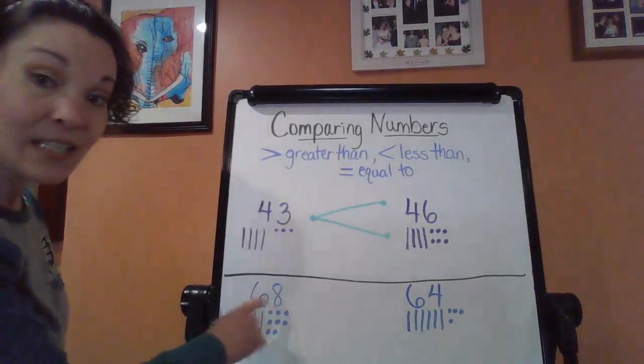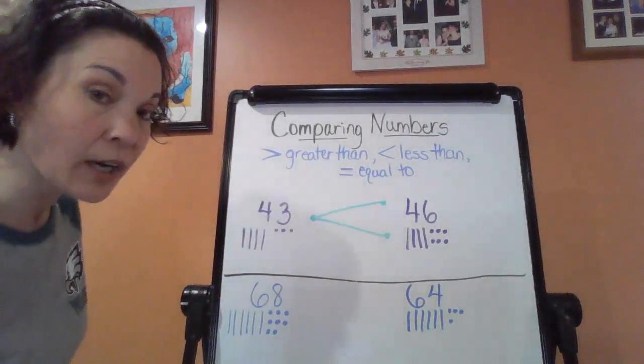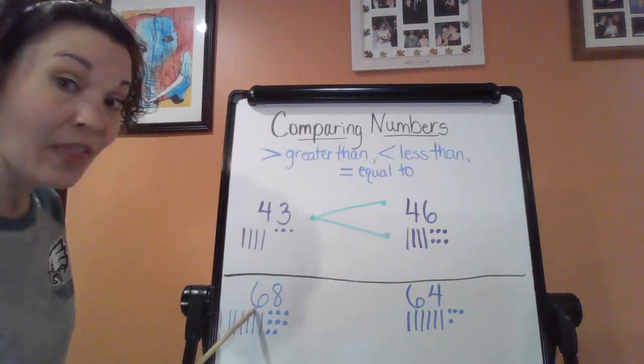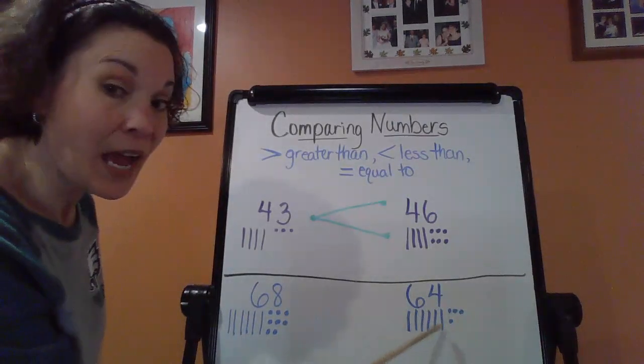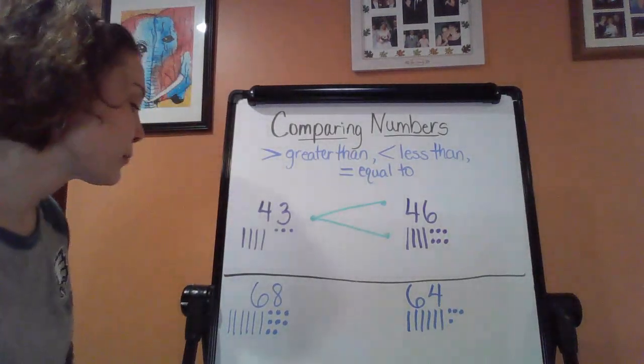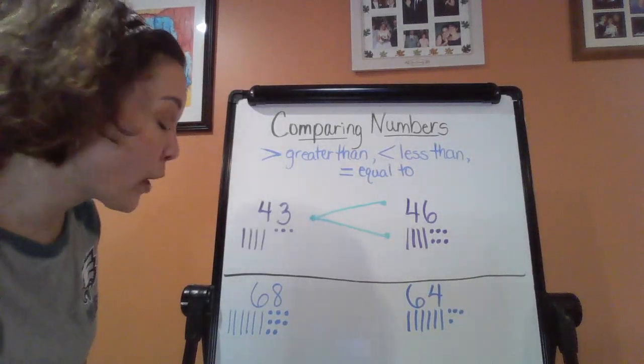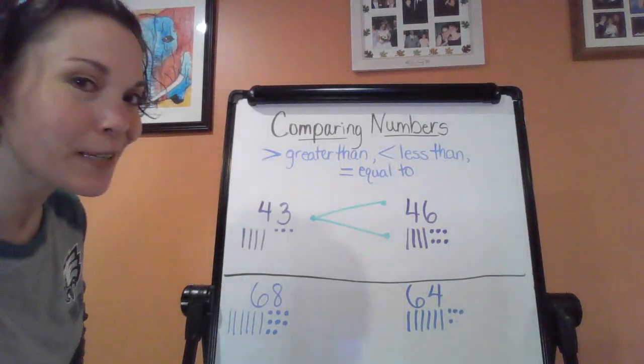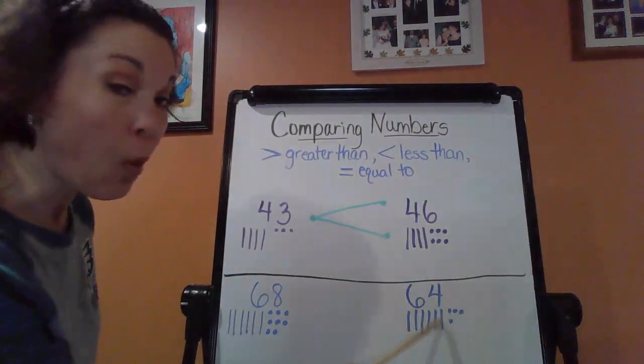So now, we have 68 versus 64. So remember, always start with your greatest value. Your greatest place, which is the tens. Six tens. Six tens. Do the same again. So my mathematicians out there, what should we be doing? Where should we be looking? Where should we be going? Yep. The ones place again.